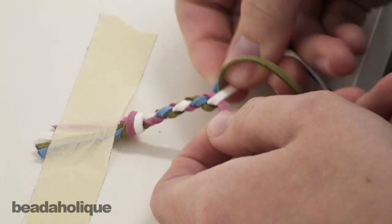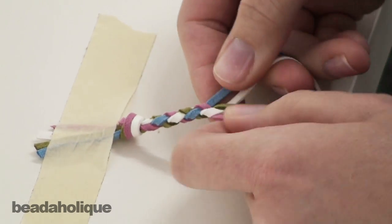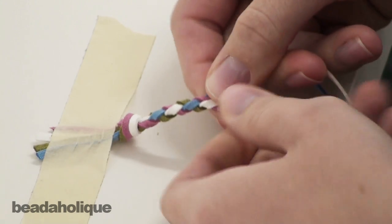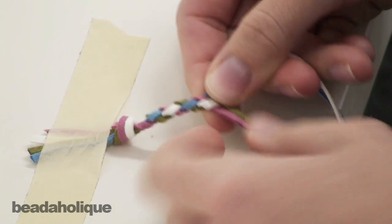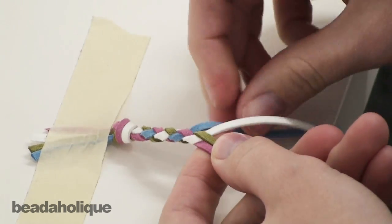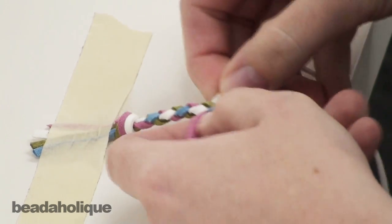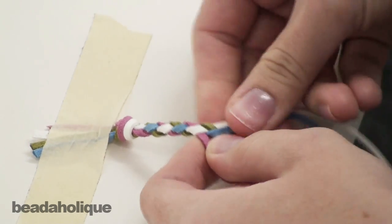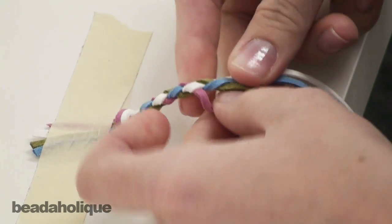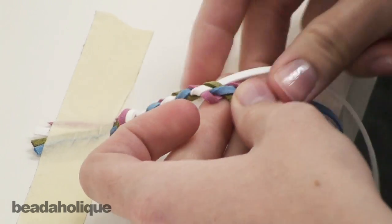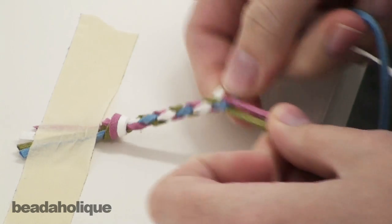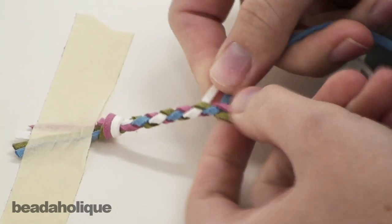And make sure that your strands don't get twisted the wrong way as you're working or else it will show twists in the outside of the braid. I'm just going to do a little bit more of this just so you can really get a handle on what it looks like.